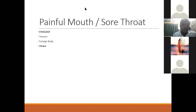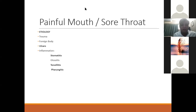In adults, the commonest foreign body in the oral cavity or oropharynx is a fish bone. The most common site for a fish bone is the base of the tongue, and the second most common site is the tonsils. Inflammation can be generalized inflammation of the mouth, called stomatitis, or restricted to one area such as the tongue, called glossitis, or tonsillitis, or pharyngitis of the posterior wall.